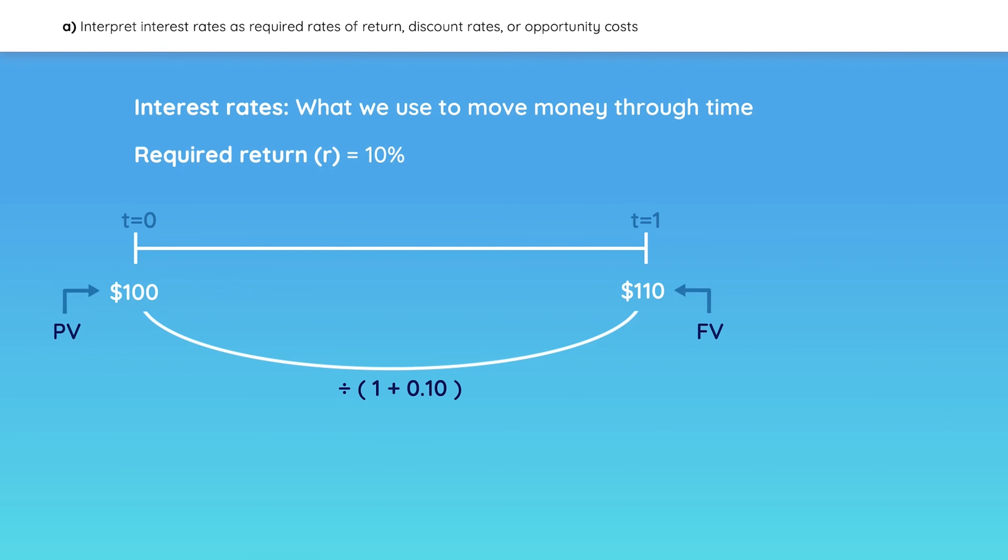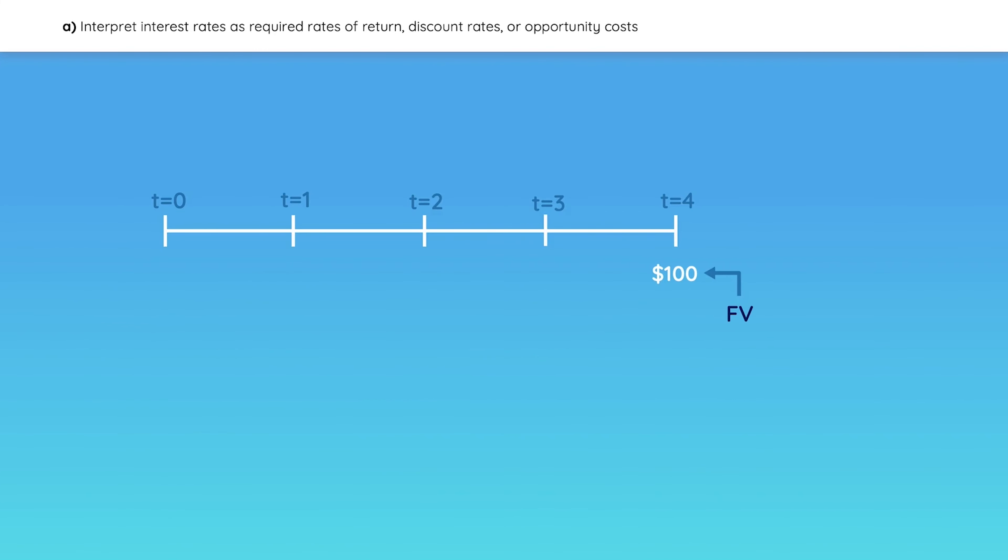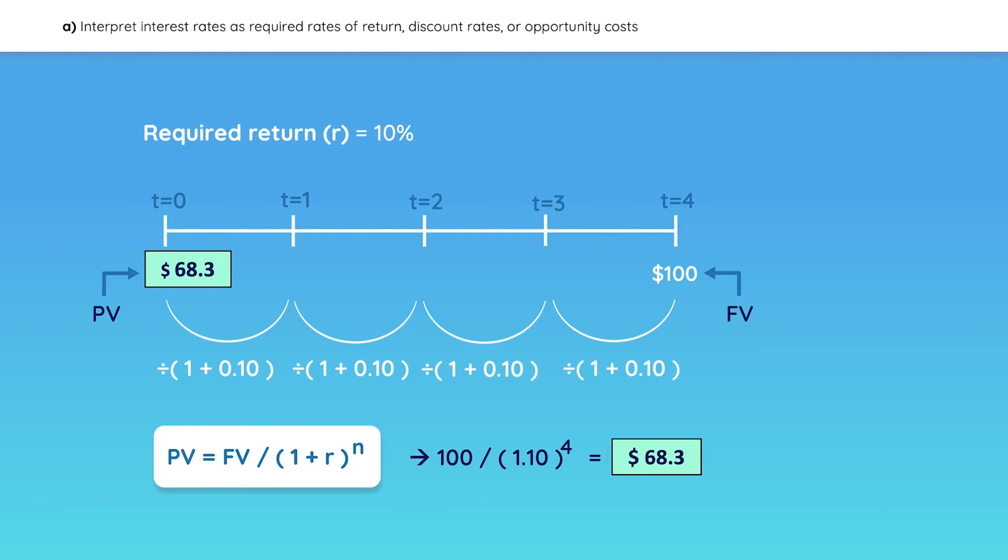This is the reasoning behind the future value formula. Let's do a quick example. If you are receiving $100 in four years and have a required return of 10%, how much would you be willing to pay for that today? Divide by 1 plus R four times, which is the same as using this formula. Either way, the present value should be equal to 68.3.